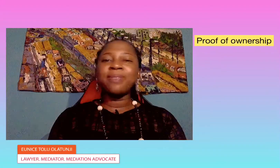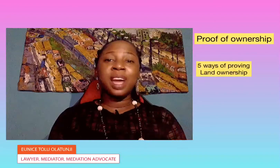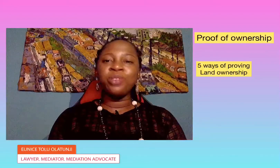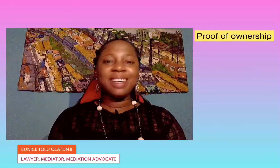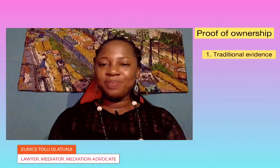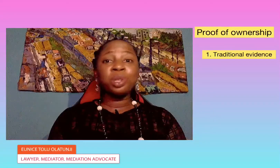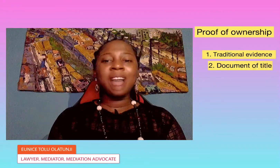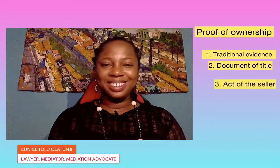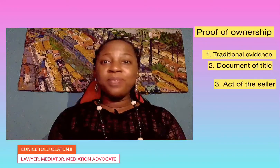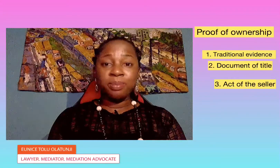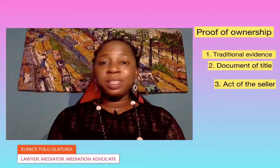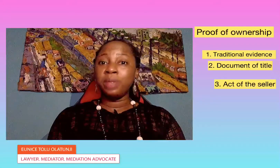Over the years our courts have identified five ways of proving ownership to land, and they are: traditional evidence, production of document of title, and act of the person selling — for example, leasing out the property or the land.